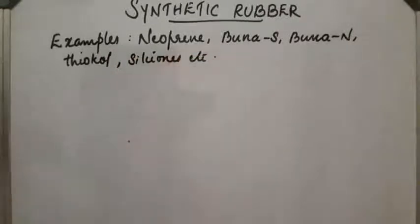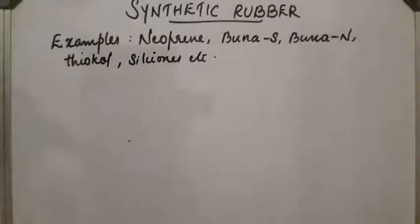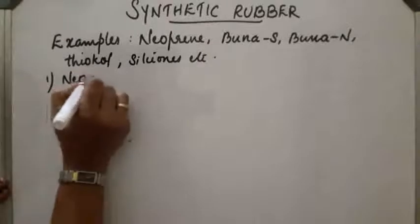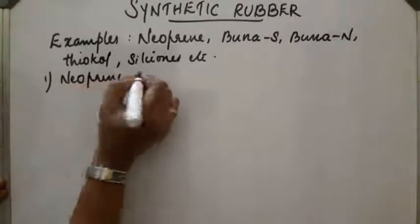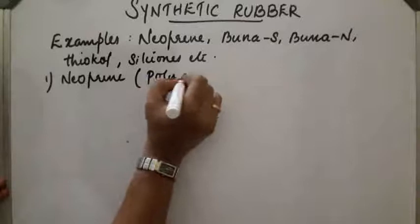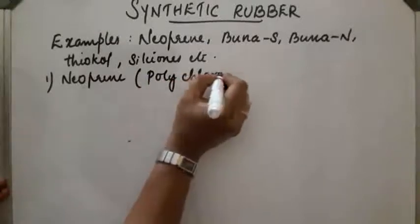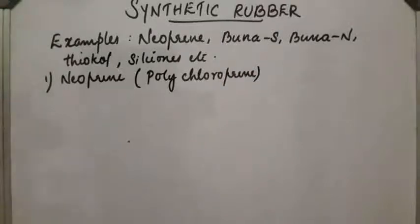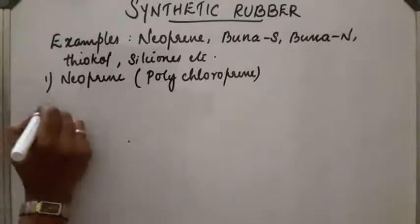Let us discuss one by one. First one, Neoprene. Neoprene is polychloroprene. So polymerization of chloroprene takes place in the presence of a catalyst called Ziegler-Natta catalyst. And chloroprene is this.